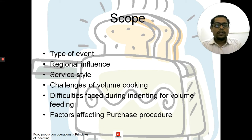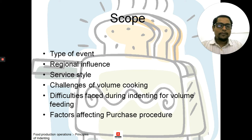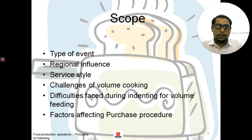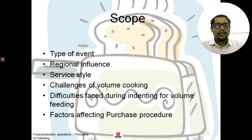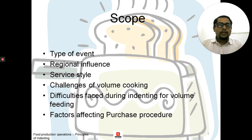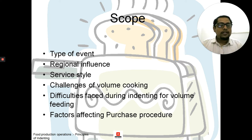Welcome again to my class. I am Chef Aritya Saksena. Today we will be covering the next three principles of indenting. In the previous video we learned the first principle, which was yield of a product. Today we will be learning about the next three principles: type of event, regional influence, and service style. We will also cover challenges of volume cooking, difficulties during indenting for volume feeding, and factors affecting purchasing procedures.